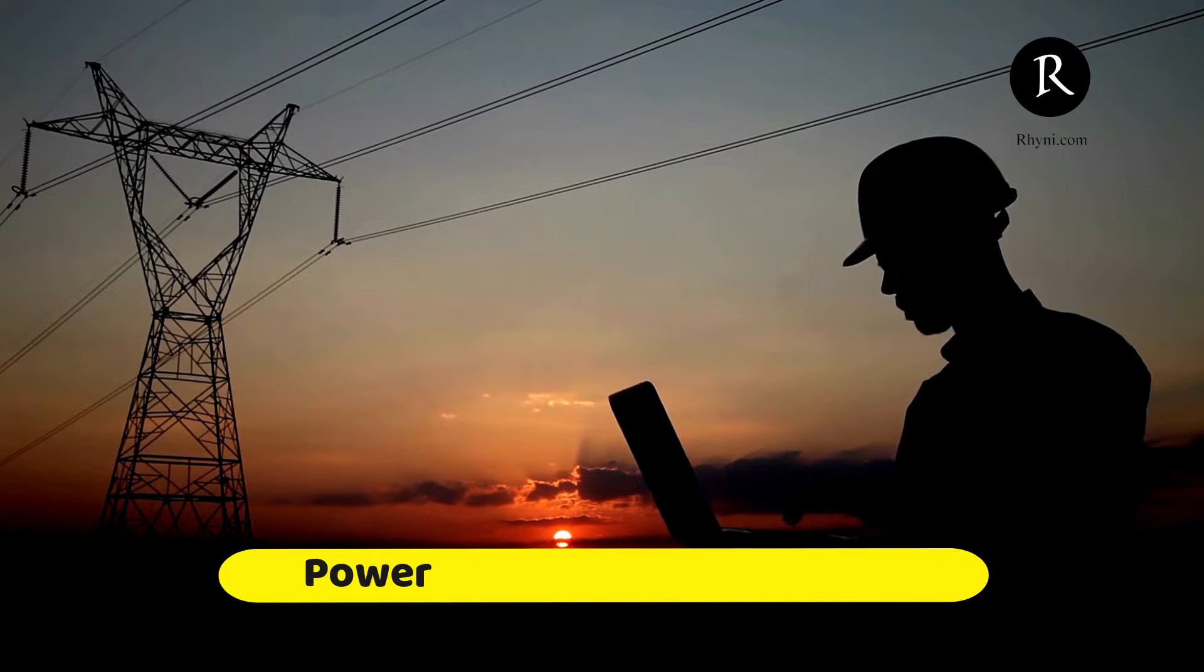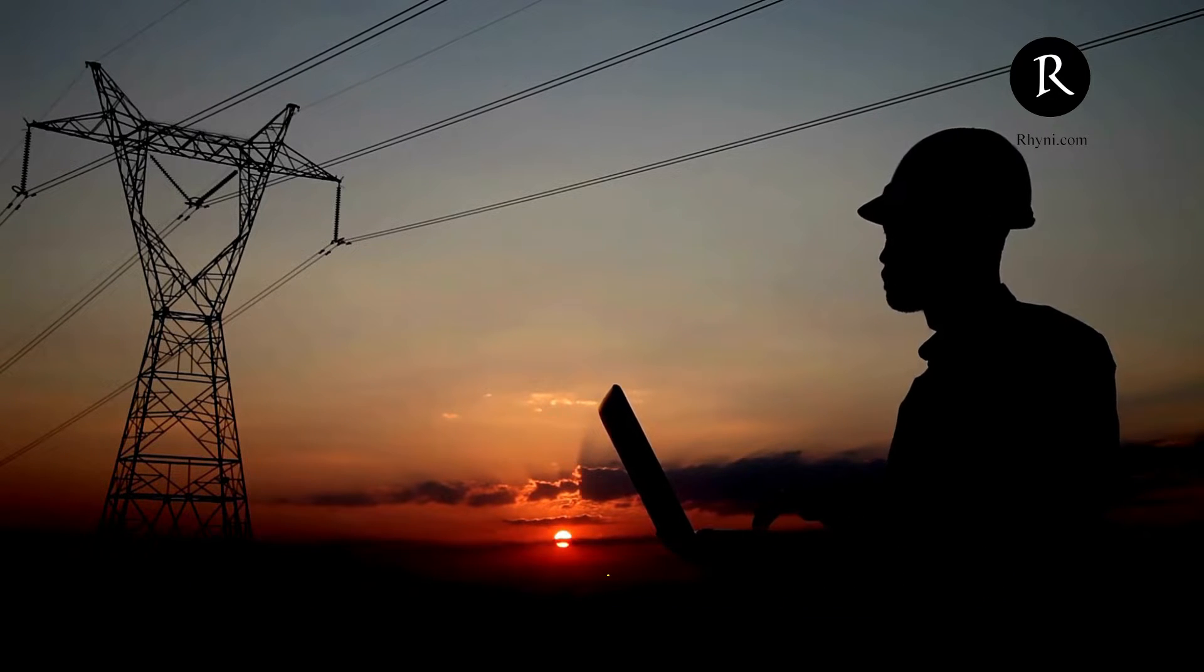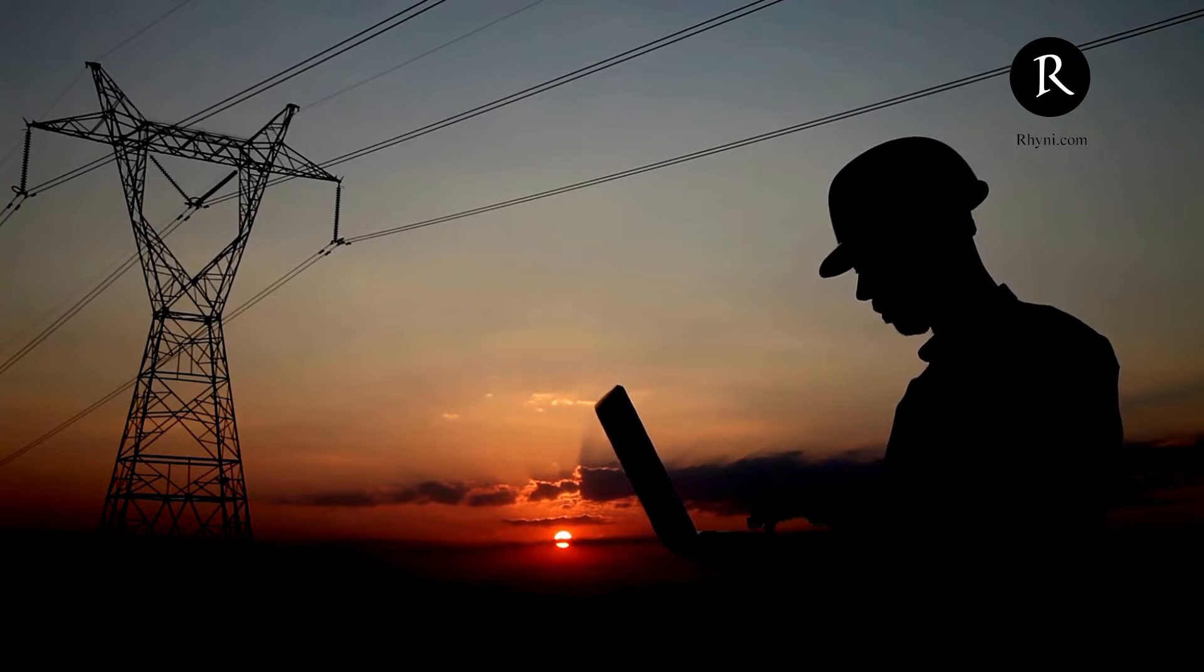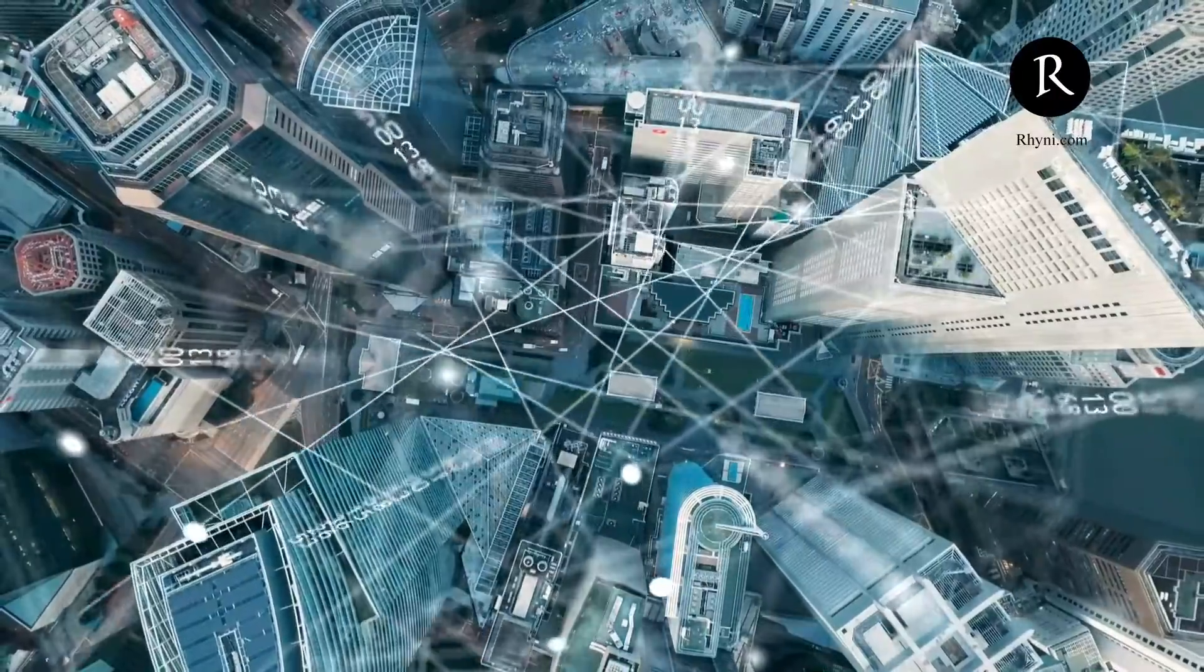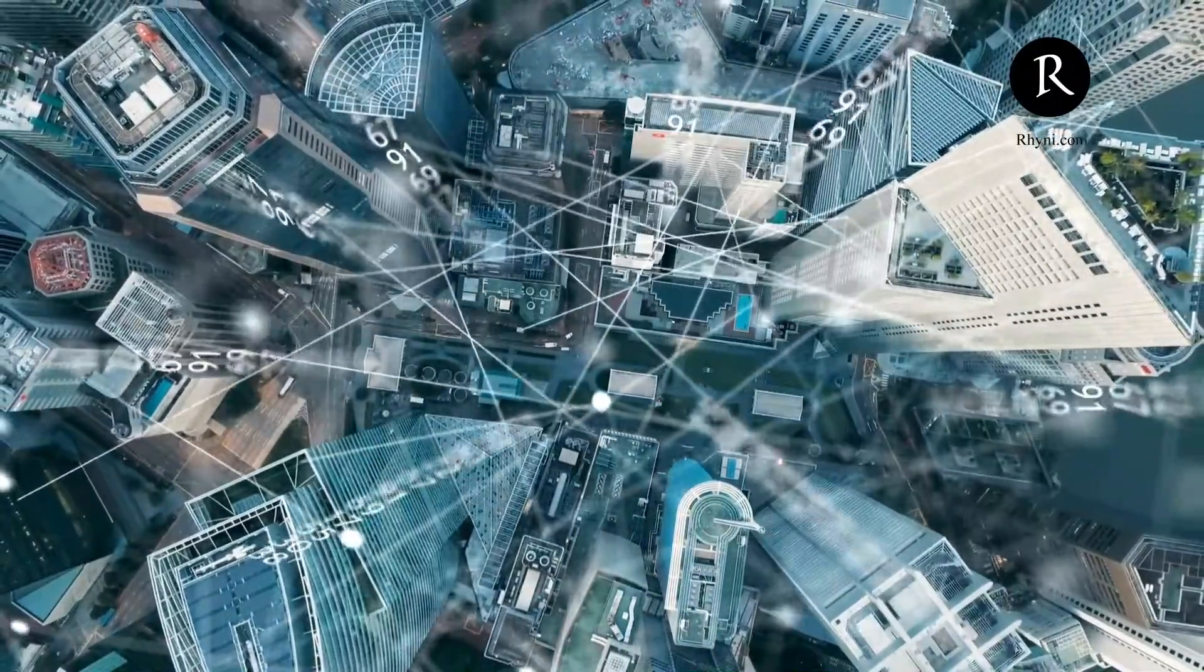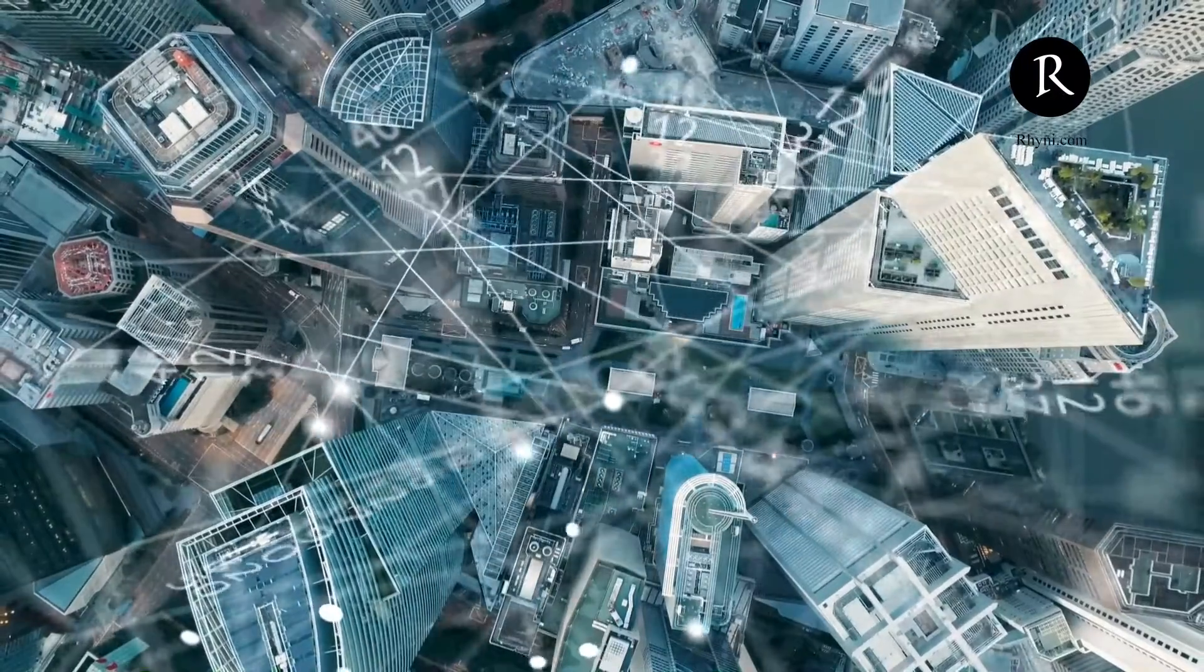Power systems and smart grids: AI algorithms are used to optimize power generation, transmission, and distribution in electrical grids. Smart grid technologies leverage AI for load forecasting, fault detection, and energy management, improving efficiency and reliability while reducing costs.